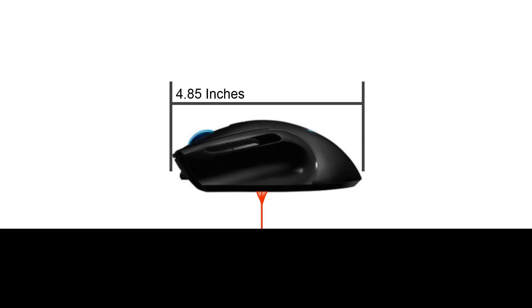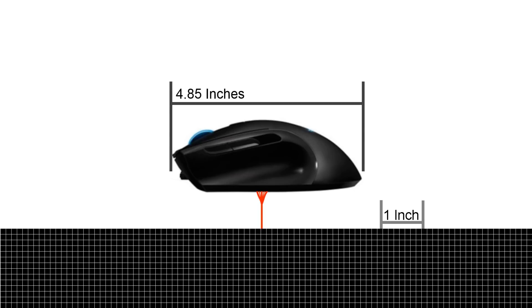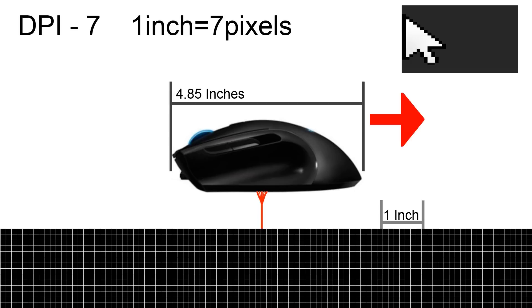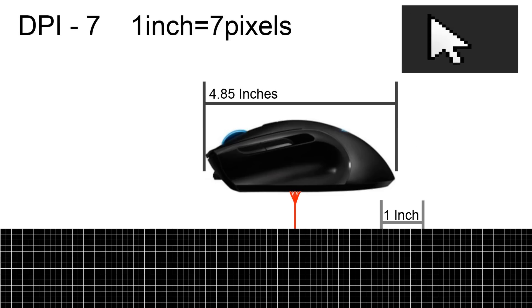Let's add a grid to display the pixels. Now let's measure out 1 inch. At this level of sensitivity, we can see that the dots per inch is 7. So if we were to move the mouse 1 inch, it will move the cursor 7 pixels.